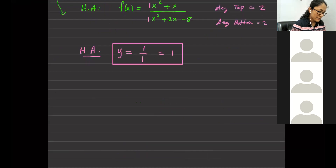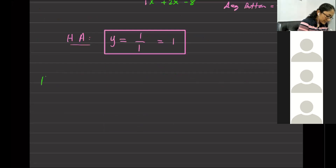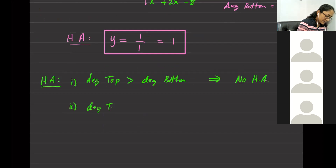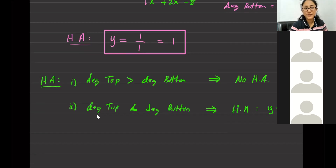Student: Can we go over the other two rules for horizontal asymptote when degrees are different? Sure. There are three rules. If the degree of the top is greater than the degree of the bottom, there is no horizontal asymptote. If the degree of the top is less than the degree of the bottom, the horizontal asymptote is y equals zero. And if they're equal, it's the ratio of their leading coefficients.